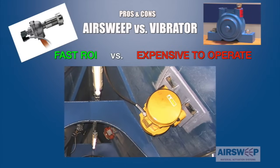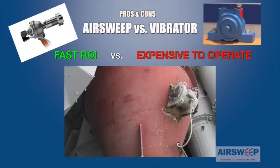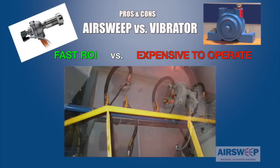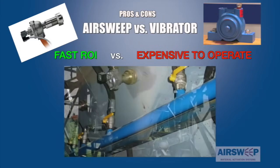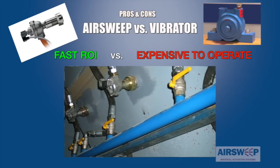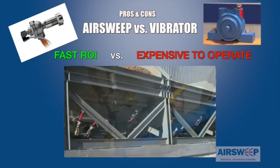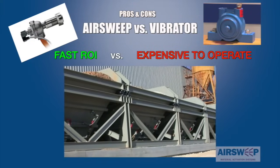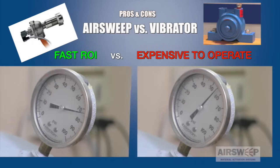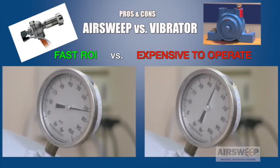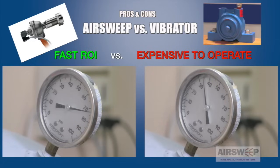While it may seem more cost effective to install a single vibrator versus a typical air sweep system with multiple components, the advantage of the air sweep system quickly outweighs the initial cost and provides a fast return on investment. The utilities cost of a constantly running vibrator far outpaces the cost of the intermittent pulsing of the air sweep system, allowing the air sweep system to quickly recapture the initial implementation costs.